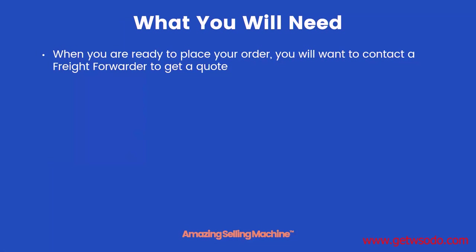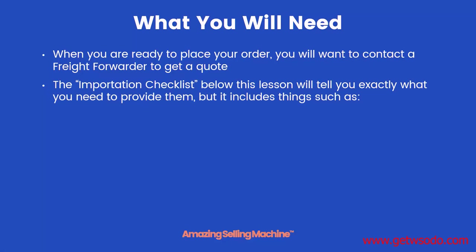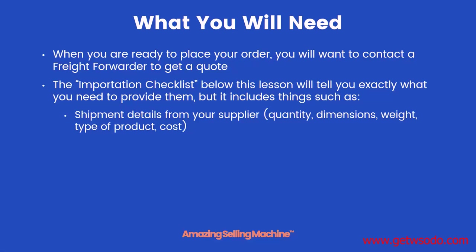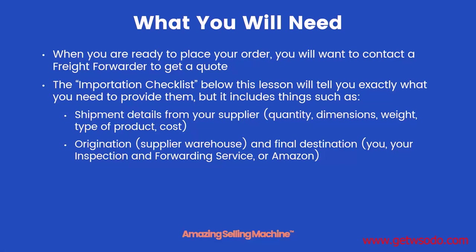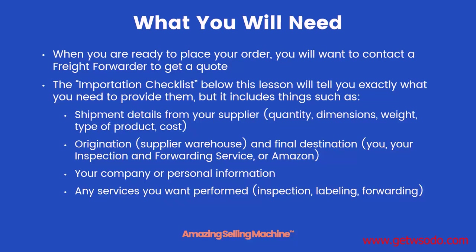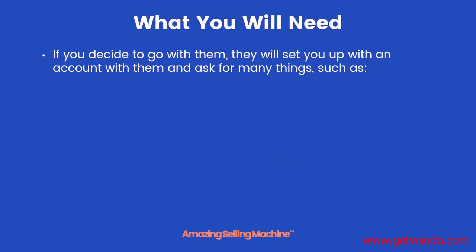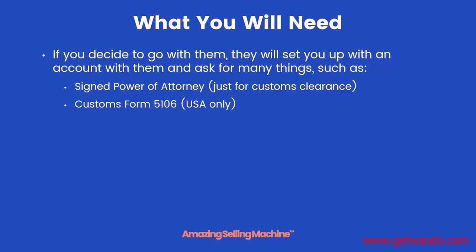Once you're ready to place your order, contact a freight forwarder and get a quote. The importation checklist below this lesson tells you exactly what to provide, including shipment details from your supplier such as quantity, dimensions, weight, type of product, cost, origination warehouse, and the final destination — whether that's your home, your inspection service, or Amazon. You'll also need your company or personal information, and any services you want performed such as inspection, labeling, and forwarding.